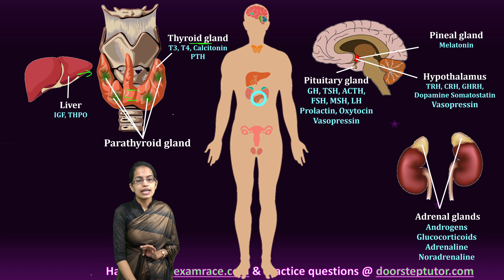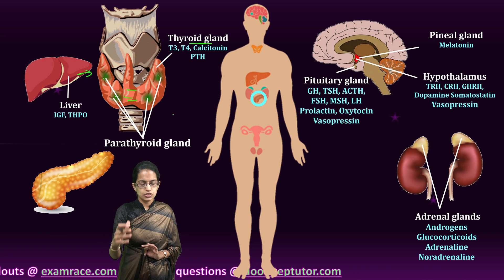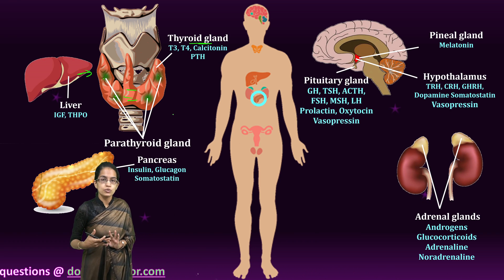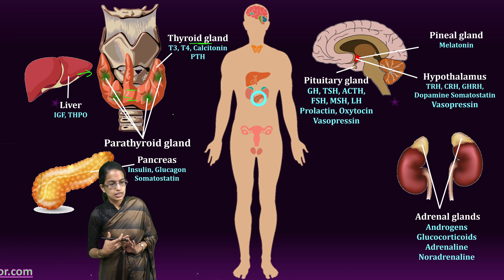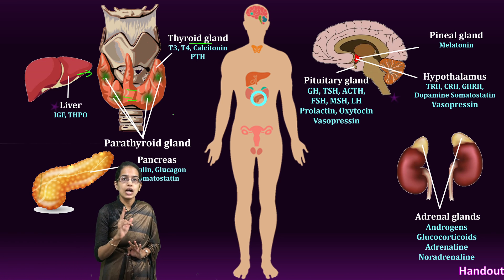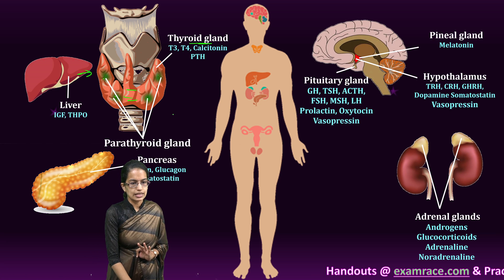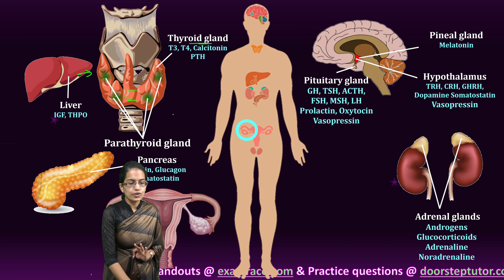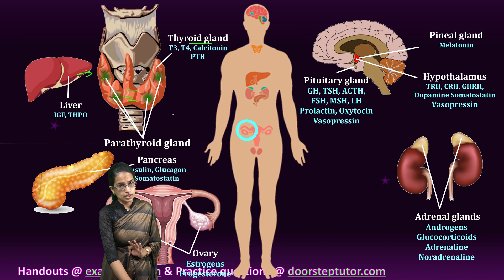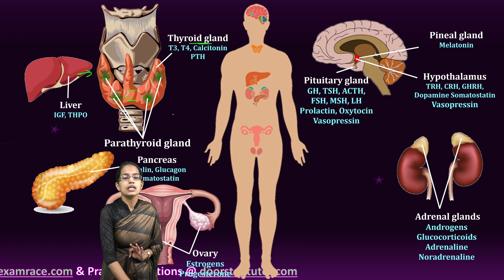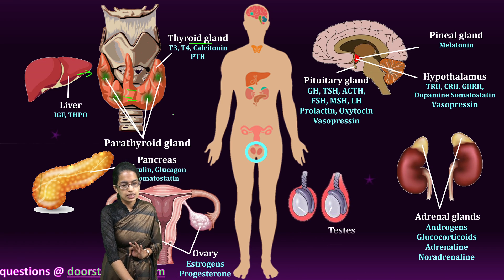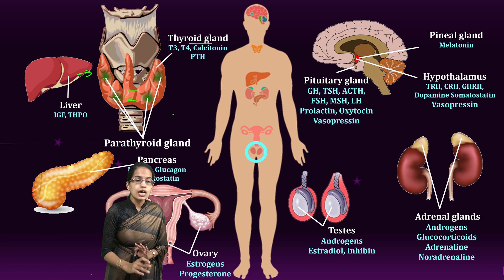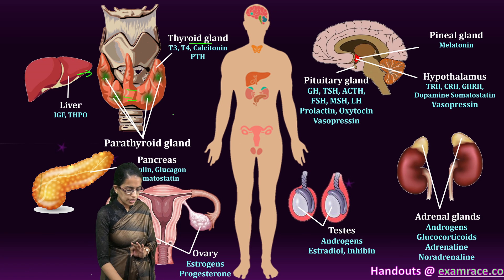Next is the pancreas, a leaf-like structure whose major secretions are insulin, glucagon, and somatostatin. The pancreas has alpha, beta, and delta cells. In females, there is the ovary, with estrogen and progesterone as major secretions. In males, there are the testes, with androgens and inhibins as major secretions.